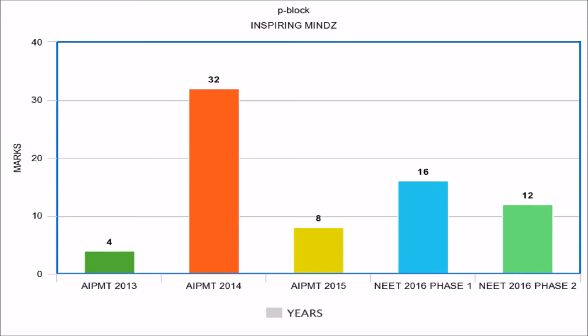The next important topic is P block elements. In AIPMT 2014, the weightage for this chapter was 32 marks. In NEET 2016 Phase 1 it reduced to 16 marks, in NEET 2016 Phase 2 it further reduced to 12 marks, in AIPMT 2015 the weightage was 8 marks, and in AIPMT 2013 the weightage was 4 marks.